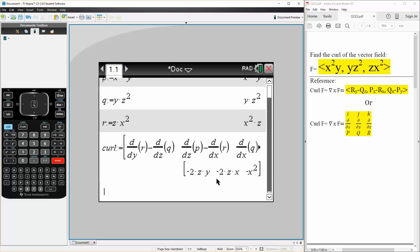And this would be our answer, so minus 2 y z, comma, minus 2 x z, comma, negative x squared, and that's all we need to do.